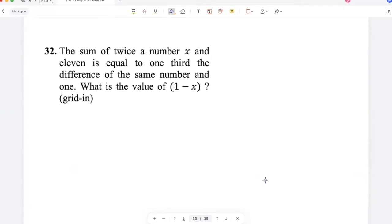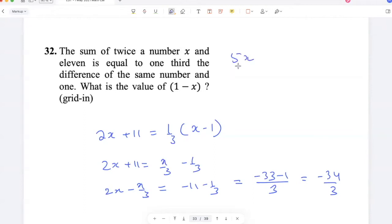The sum of twice a number x and 11 is equal to one-third the difference of the same number and 1. What is the value of 1 minus x? 2x plus 11 equals x by 3 minus 1 by 3. So 2x minus x by 3 is -11 minus 1 by 3. x is -34 by 3, so x is -34 by 5. I have to find 1 minus x, that's 1 plus 34 by 5, so that's 39 by 5.